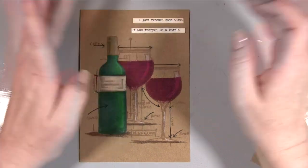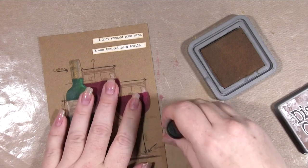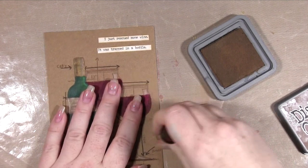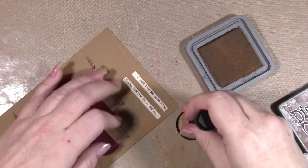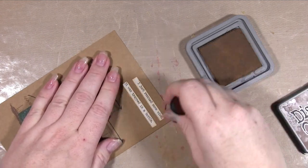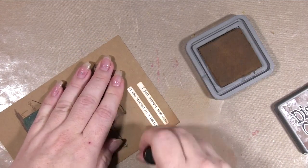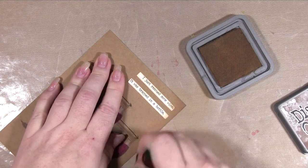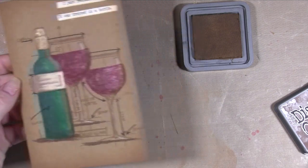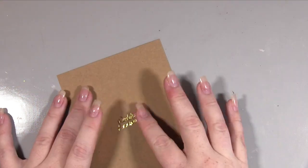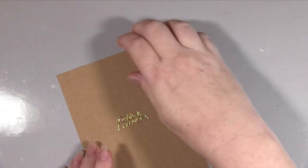Then I took the vintage photo again and I'm just going around all the edges just to kind of distress that, to blend in a little bit of color on the edge. I think it works really well with this stamp being kind of that blueprint kind of distressed look.